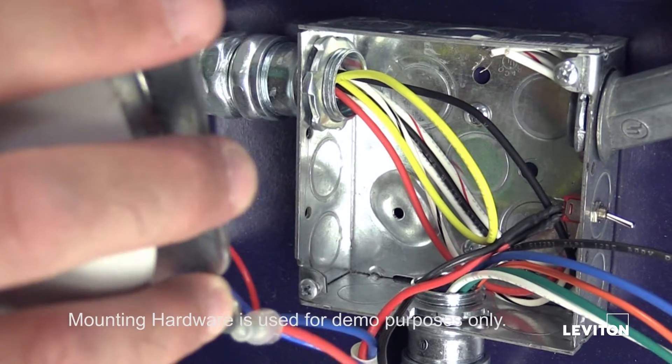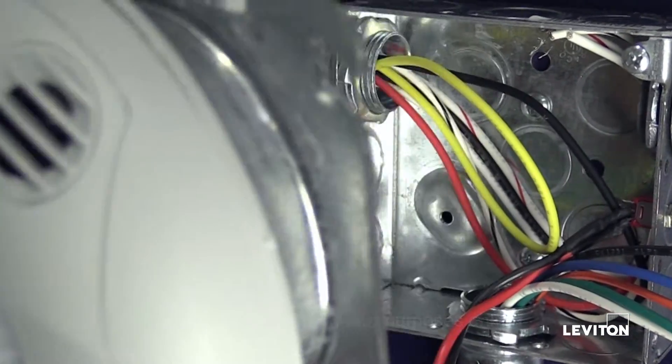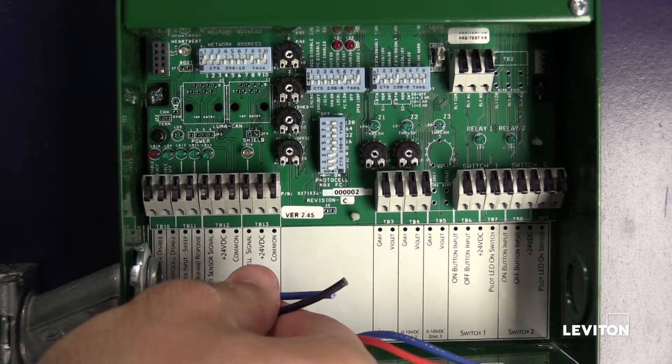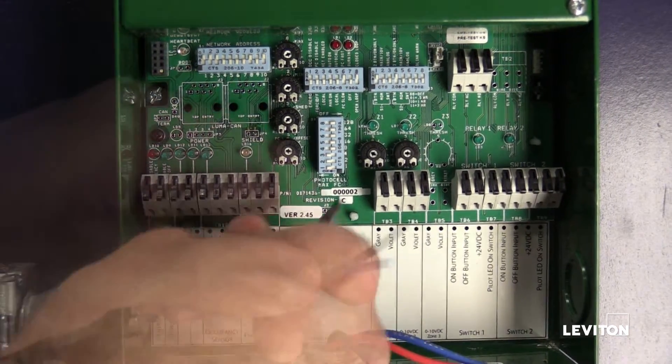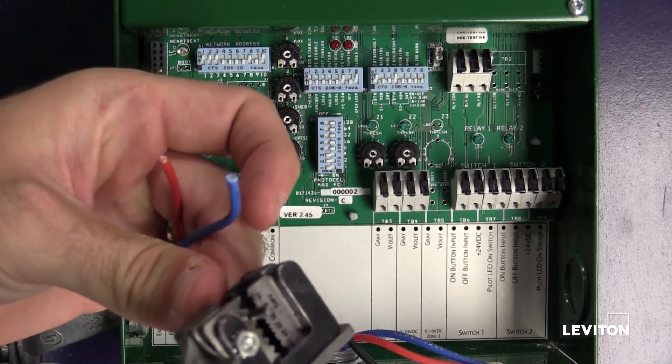Always be sure to verify and record the wire colors before landing the wire in your integrated room controller. Run your 18 gauge wire or CAT6 cable through the conduit connector feeding the IRC. Strip the ends of your wire to 3 eighths of an inch.